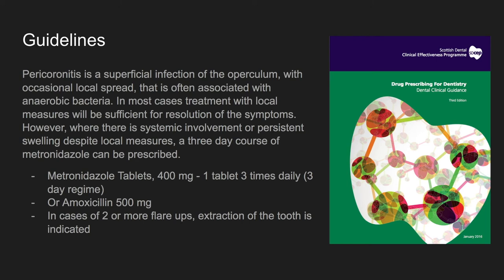The Scottish Guidelines specifically address when to administer antibiotics — that is when there is systemic involvement such as fever, difficulty swallowing, and severe trismus. At that point, you are looking to administer metronidazole tablets 400 mg, one tablet three times daily for a three-day regime, or amoxicillin 500 mg for the same regime.